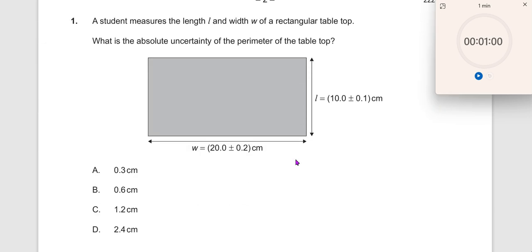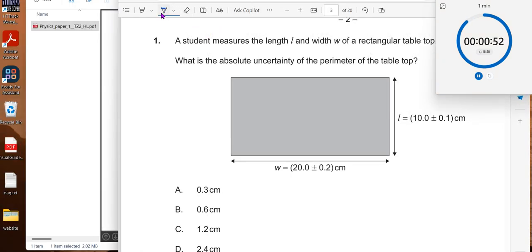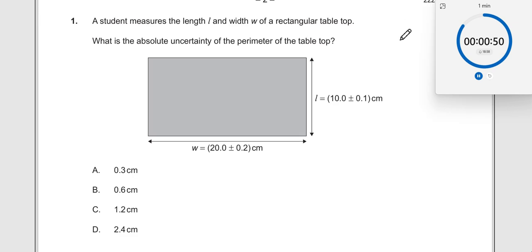So here goes the first question. The first question says a student measures the uncertainty... Let me start the timer here. A student measures the uncertainty length. Let me turn on my pen. A student measures the uncertainty length l and width w of a rectangular table top. What is absolute uncertainty in the perimeter of the table top?